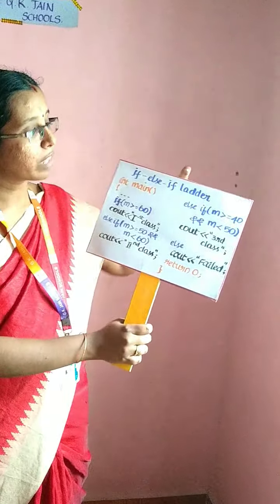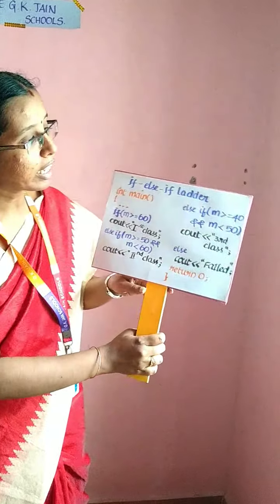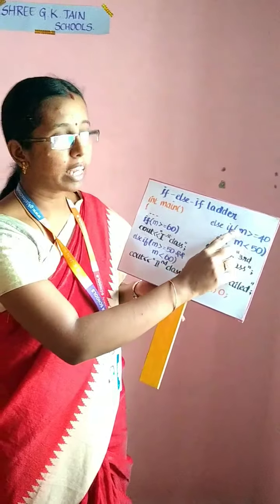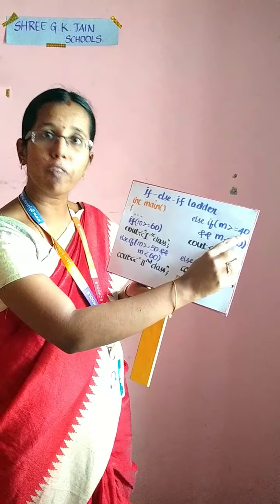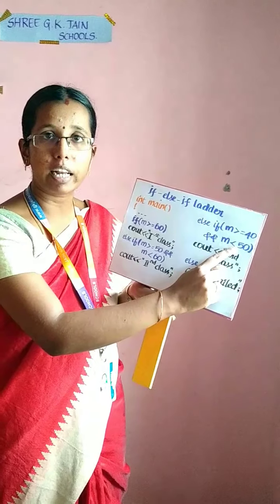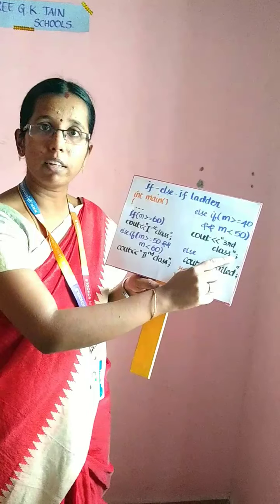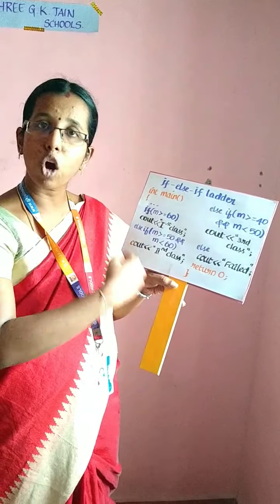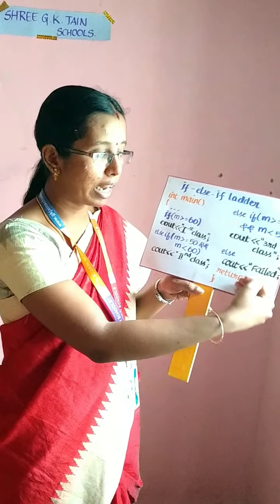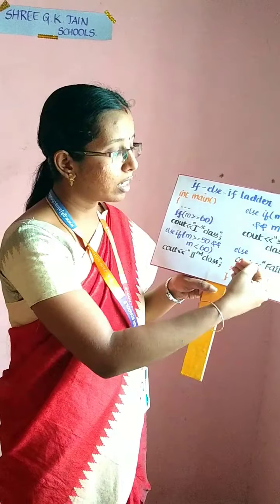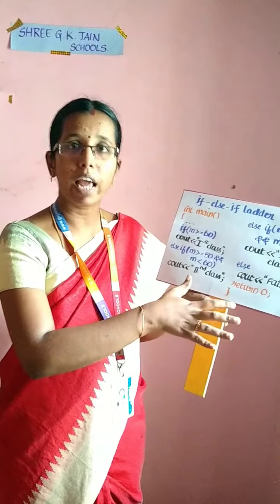If it is false, then the condition again jumps to the next else-if. In that else-if statement, it checks: if mark is greater than or equal to 40, so from 40 to 49. If your mark lies in that range, then your output will be third class. If your mark is not in any of these ranges, the control will jump to the else statement and return the output as failed. So this is your if-else-if ladder.